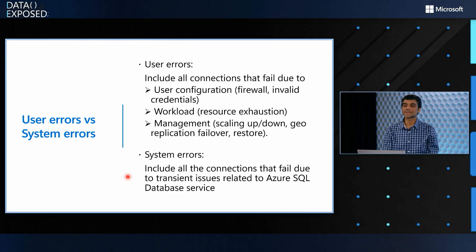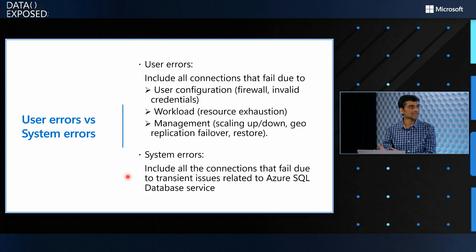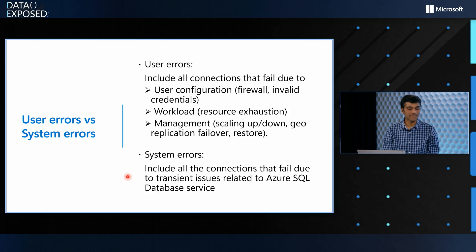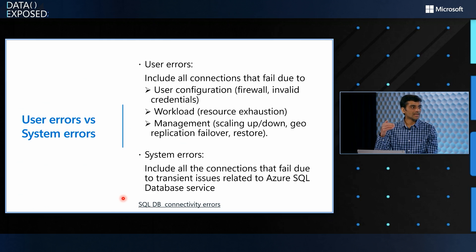System errors are all those transient errors — that famous error 40613. For example, if there's a reconfiguration going on behind the scenes and it takes more than 60 seconds, that's when you'd see that downtime as one minute, and it'll start showing up as a downtime minute in the availability metric. We'll share a link in the show notes so that customers can see the documented list of user errors and system errors.